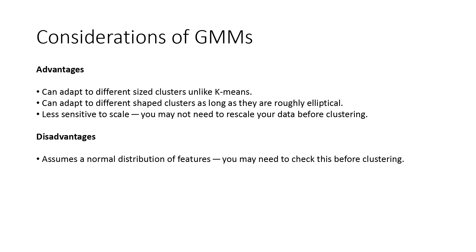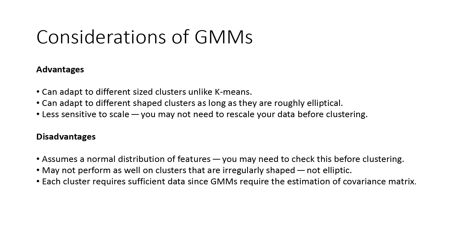Some disadvantages include GMMs assume a normal distribution of features - you may need to check this before clustering. They may not perform as well on clusters that are irregularly shaped, that is they are not elliptic. And each cluster requires sufficient data since GMMs require the estimation of the covariance matrix. That brings us to the end of this episode and I hope you learned something new.